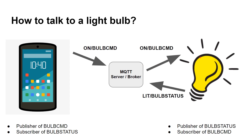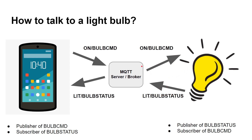The light bulb switches itself on. It then sends back 'lit' under bulb status. The bulb status finally gets back over to the smartphone because the smartphone is a subscriber to bulb status. So the smartphone can know it's issued a command and effectively gets a response back saying 'yes, I've switched on.'